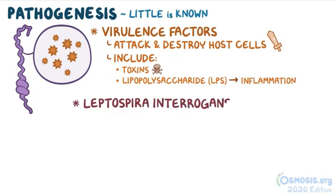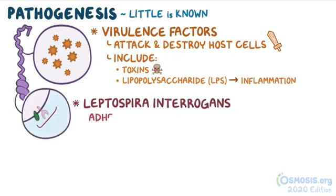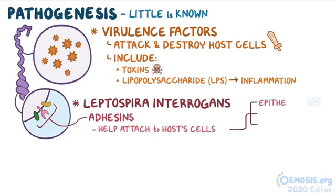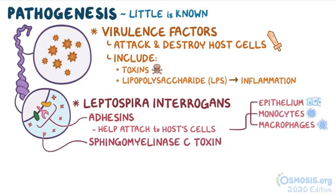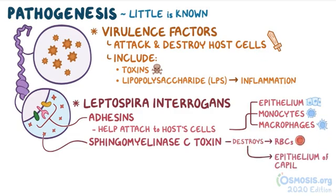For example, Leptospira interrogans, the most common cause of leptospirosis, has adhesins, which are proteins that help this bacteria attach to the host cells, usually epithelium, monocytes, and macrophages. It also releases sphingomyelinase C toxin, which destroys red blood cells as well as the endothelium of the capillaries, which causes hemorrhage.